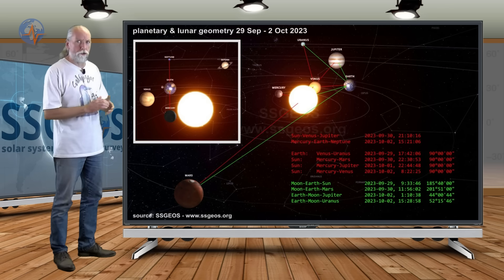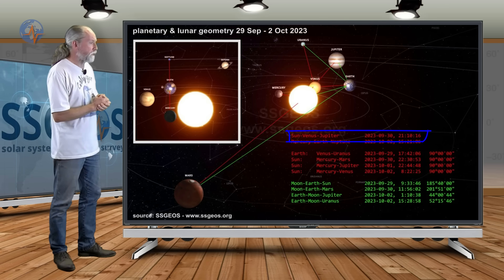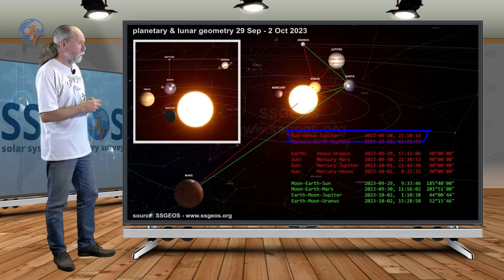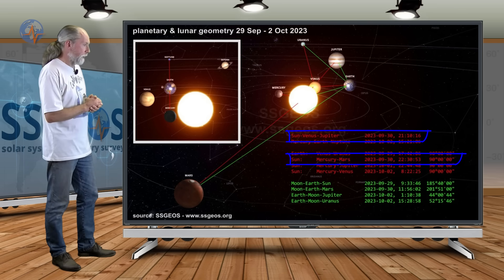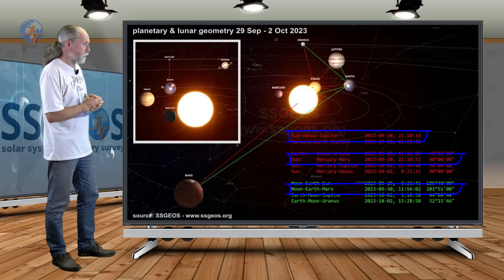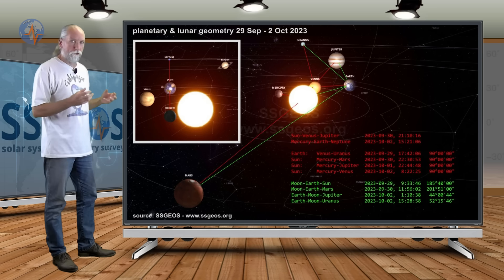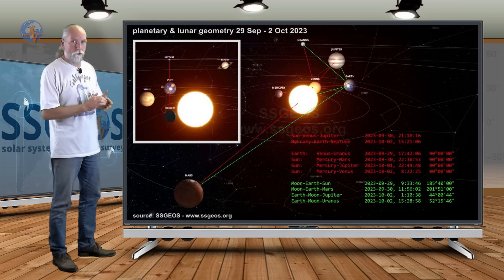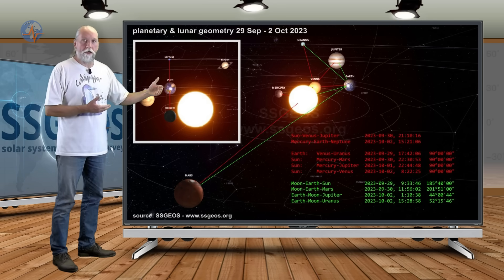But this sequence of right angles is not the only critical geometry that we have. We have planetary conjunction Sun-Venus-Jupiter tomorrow, and that will converge with this right angle Sun-Mercury-Mars, also on the 30th. We have a lunar conjunction with Mars also on the 30th. So we have a lot going on of convergence of critical planetary and lunar geometry. It's only one planetary conjunction, but we have right angle geometry, a sequence from the 29th to the 2nd, and that probably culminates.